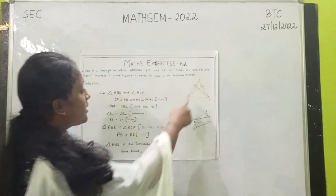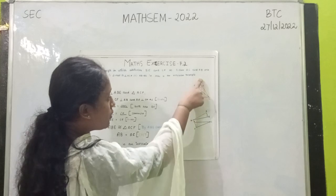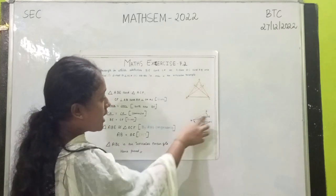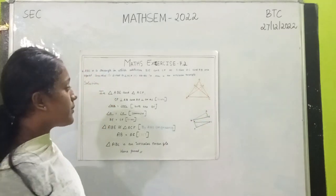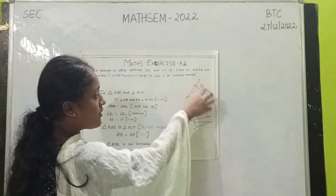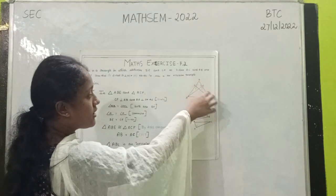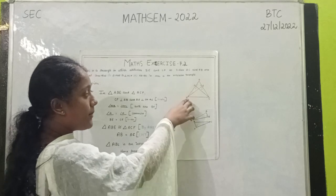So show that triangle ABE is congruent to triangle ACF, AB is equal to AC. So AC is perpendicular and CF is, AB is perpendicular.